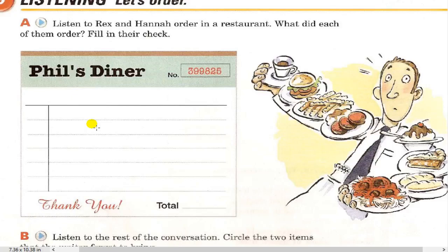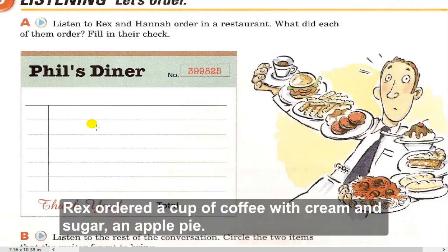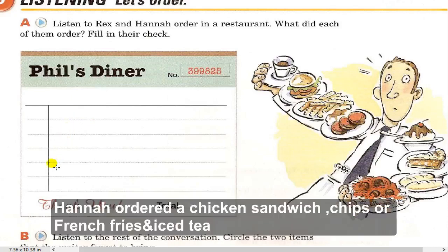Listen again. Rex ordered a cup of coffee with cream and sugar, and an apple pie. Hannah ordered a chicken sandwich, chips — that's the British word; Americans say french fries — and an iced tea. Hannah is a woman with a British accent. She said 'chips' instead of 'french fries' and 'yours' with a British pronunciation.